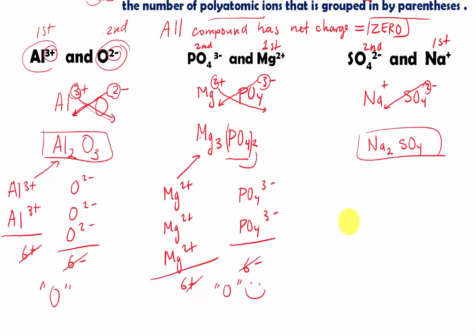And do you want to prove it? Let's prove it. Na is 1 plus. So we have 2 of it. Na plus, Na plus. That gives you 2 plus. Then we have sulfate, which is SO4 2 minus. So it's going to cancel out. And that gives us a neutral compound, a zero. And that's how you make compounds out of any given positive ion or negative ion.